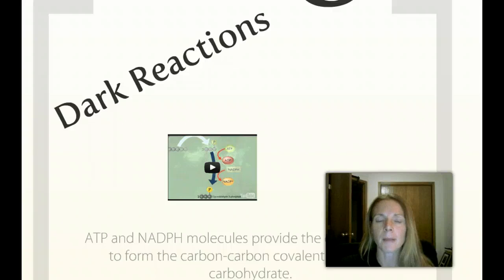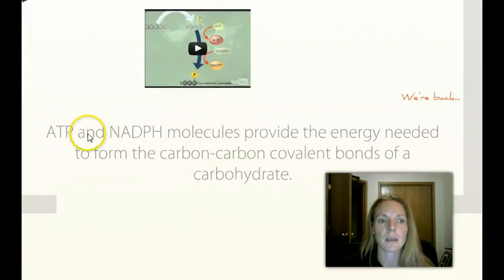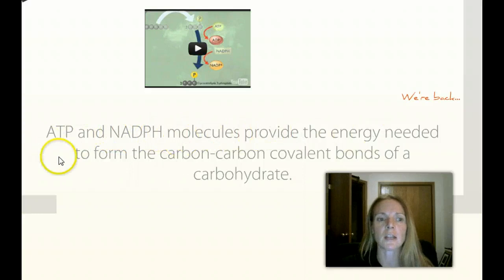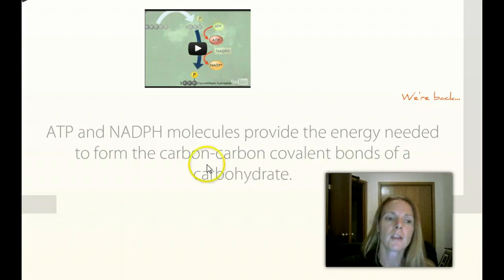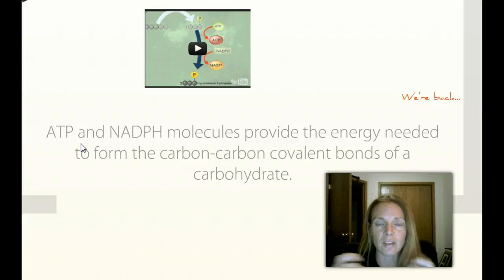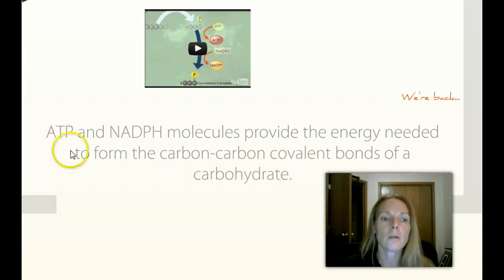The dark reactions. ATP and NADPH molecules provide the energy needed to form the carbon-carbon covalent bonds of a carbohydrate. Guess what carbohydrate we're talking about? Think of the equation. In photosynthesis, what happens after the arrow? We make glucose, right? Well, not we. Plants make glucose. So in the dark reactions, which don't need light, we've now gotten the light. The light has energized those ADP and NADP+ into ATP and NADPH. And now, these molecules are going to provide the energy needed to form that carbohydrate, known as glucose.